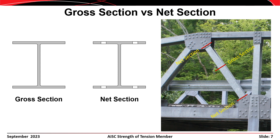The net area An of a member is the sum of the products of the thickness and the net width of each element of a section. In the case of a bolted connection, the net section is generally cut through holes that were made to accommodate the bolts. A rule of thumb is that the gross section of the member ends at a distance of about 1.5 to 2 times the major dimension of the member away from the first row of bolts.